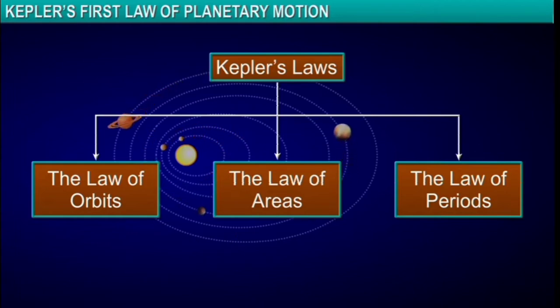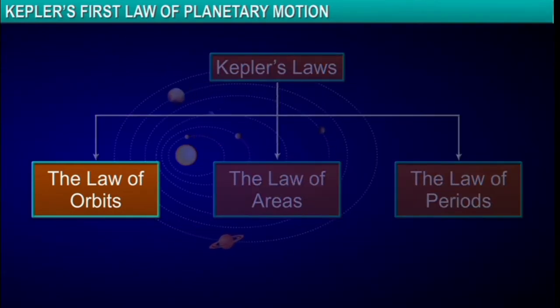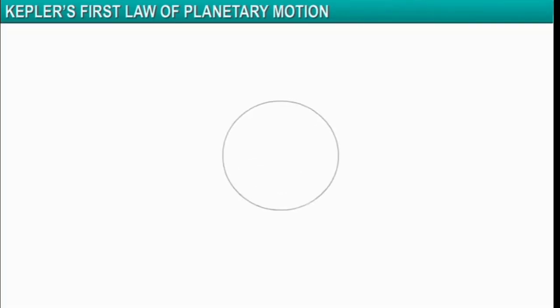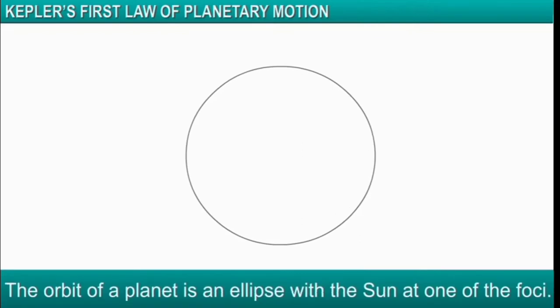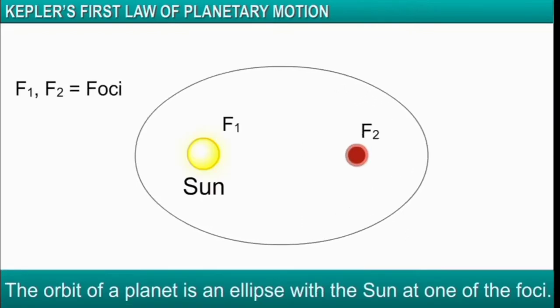Let's look at each law one by one. Kepler's first law, the law of orbits, states that the orbit of a planet is an ellipse with the Sun at one of the foci.